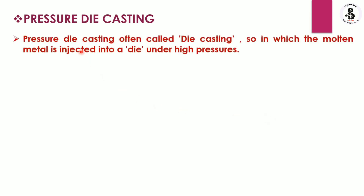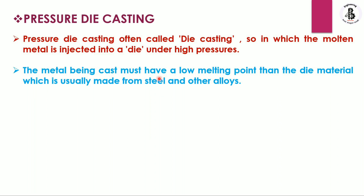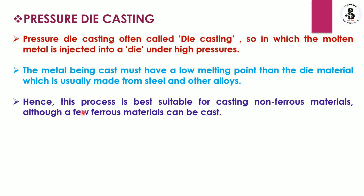Pressure die casting process, often simply called die casting, is a process in which molten metal is injected into a die under high pressure. Pressure is used for inserting the molten metal into the die. It uses a permanent die made with metallic materials, and the metal being cast must have a lower melting point than the die material, which is basically made with steels or other alloys. This process is best suitable for casting non-ferrous materials, although a few ferrous materials can also be cast.